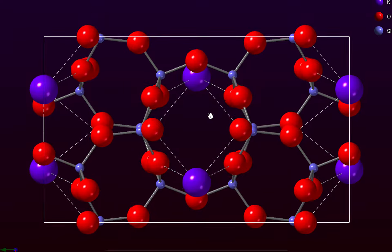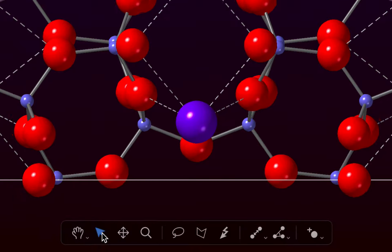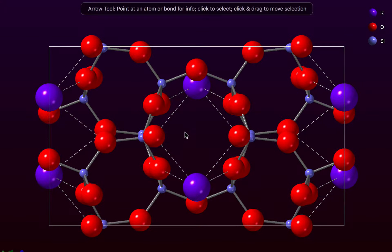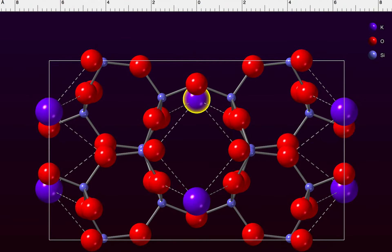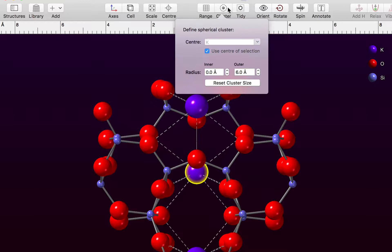We can move down to the tools palette and choose the arrow tool. Then if we select an atom of interest like this potassium atom, we can go to the cluster button in the windows toolbar. We instantly get a spherical cluster of atoms displayed on the screen.